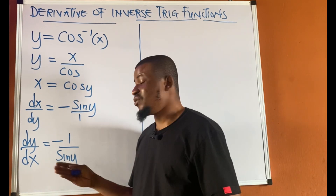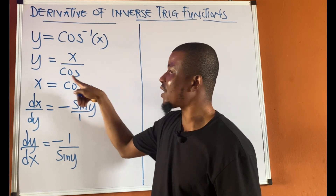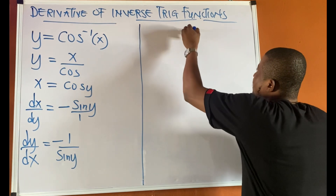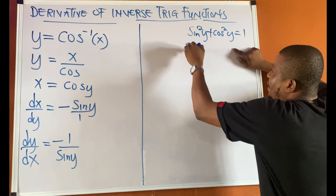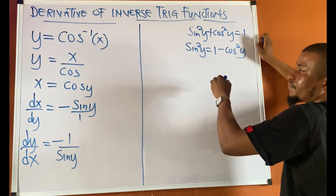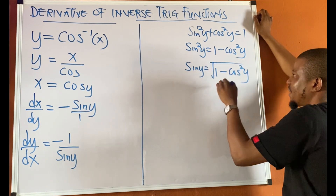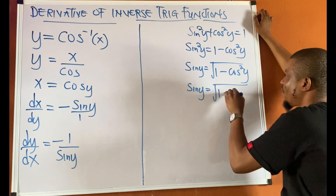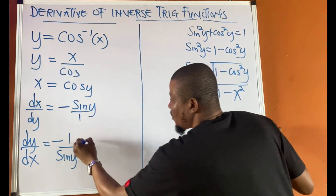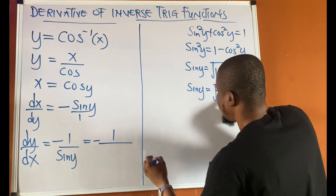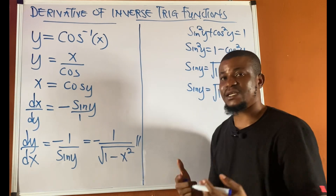We want to keep the right-hand side in terms of x, not sine y. Using the trig identity sine squared y plus cos squared y equals 1, we get sine squared y equals 1 minus cos squared y, so sine y equals square root of 1 minus cos squared y. Since x equals cos y, cos squared y equals x squared, so sine y equals square root of 1 minus x squared.